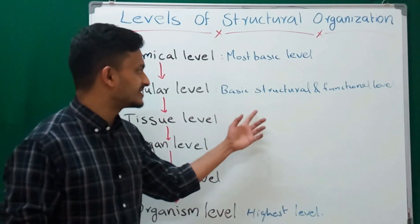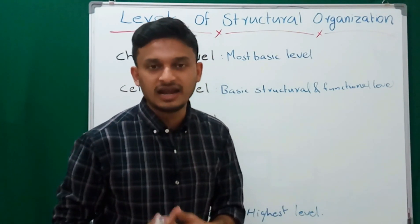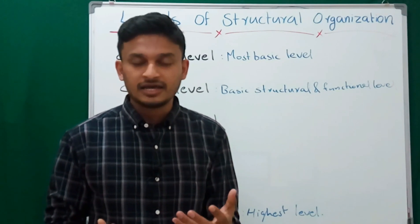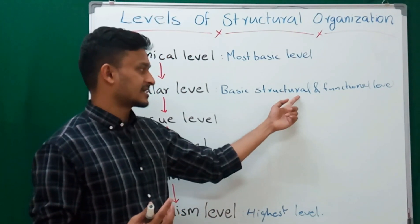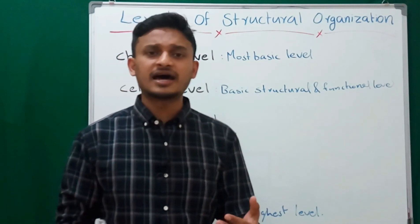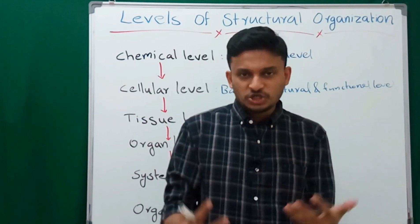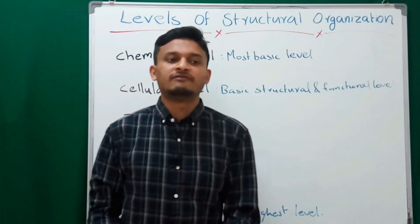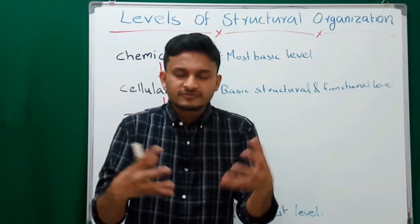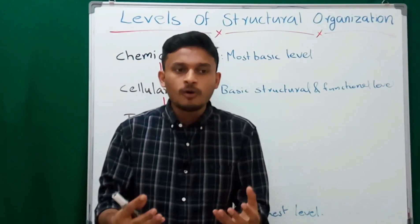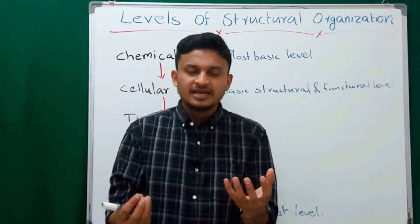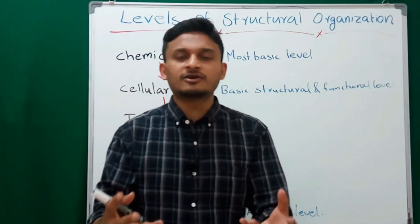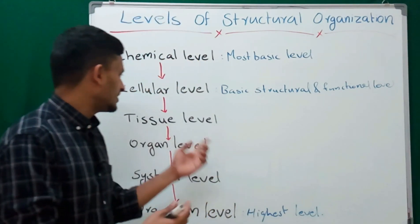The next level is the cellular level — this is the basic structural and functional level. The most basic structural and functional unit of the human body is the cell, so this level is called the basic structural and functional level. Next is the tissue level: tissues are a group of cells which work together to perform a particular function.